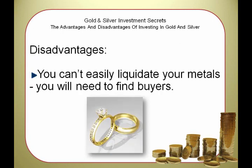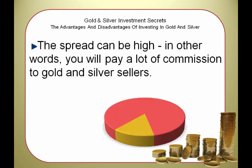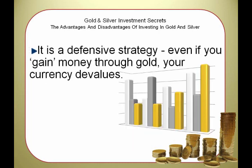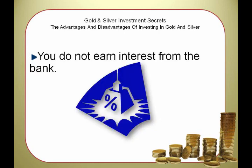Disadvantages: You can't easily liquidate your metals. You will need to find buyers. The spread can be high — in other words, you will pay a lot of commission to gold and silver sellers. It is a defensive strategy. Even if you gain money through gold, your currency devalues. You do not earn interest from the bank.